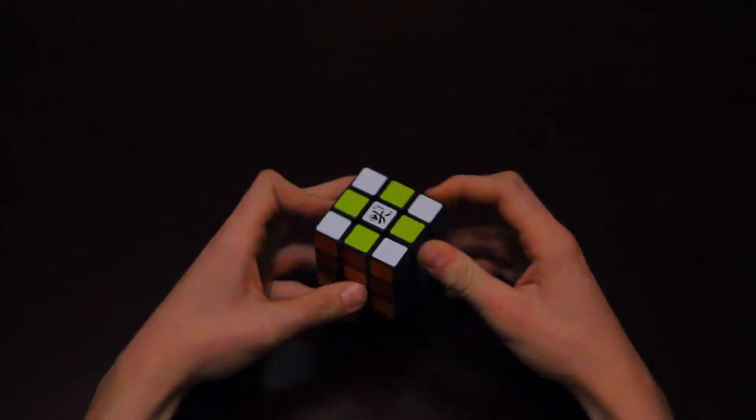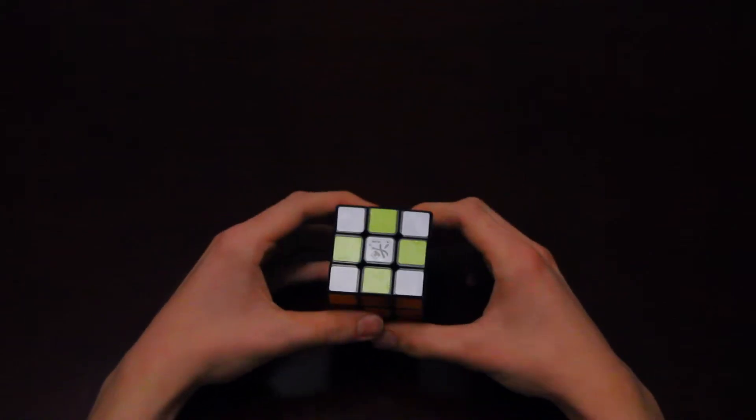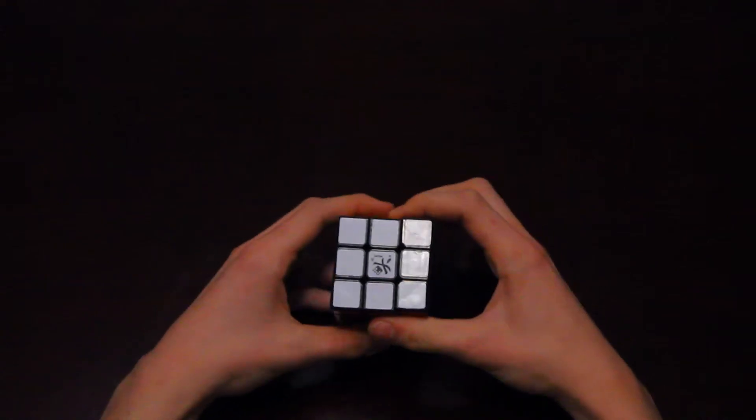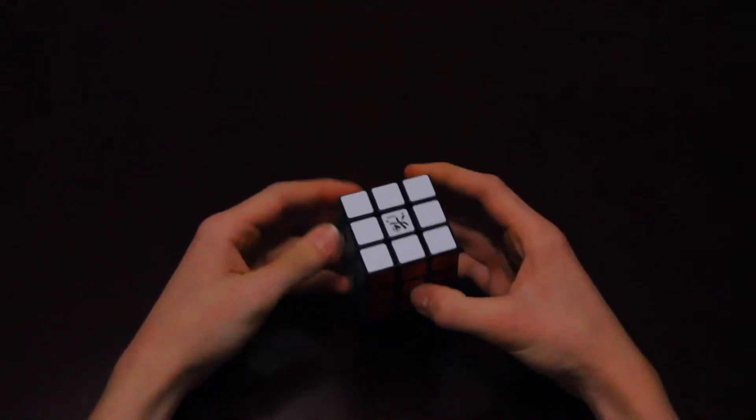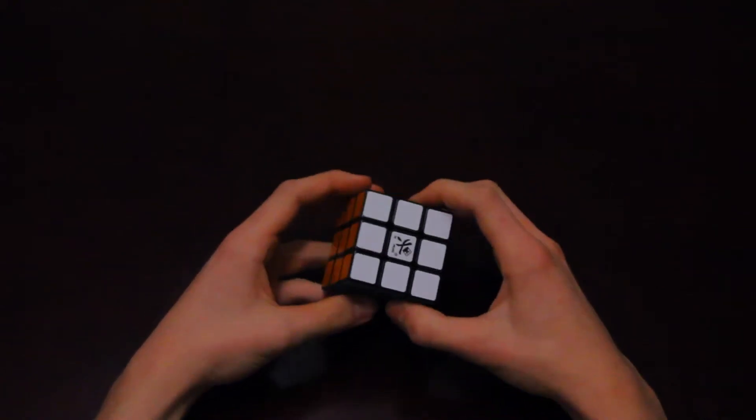Now this pattern is super duper easy, one of the easiest ones. So let's get right to it. Starting from a solved cube, you can orient the cube however you want, it doesn't matter which side is up or down, it all ends up the same.